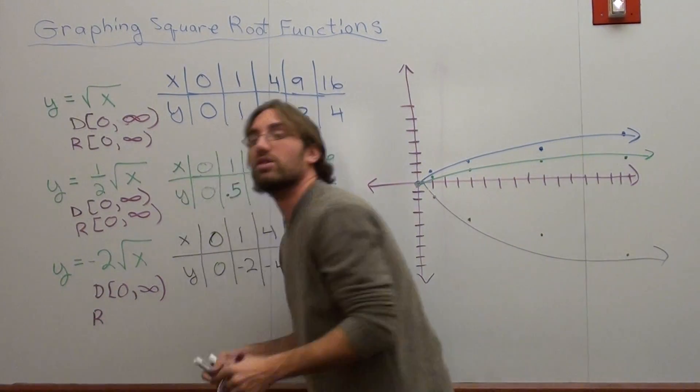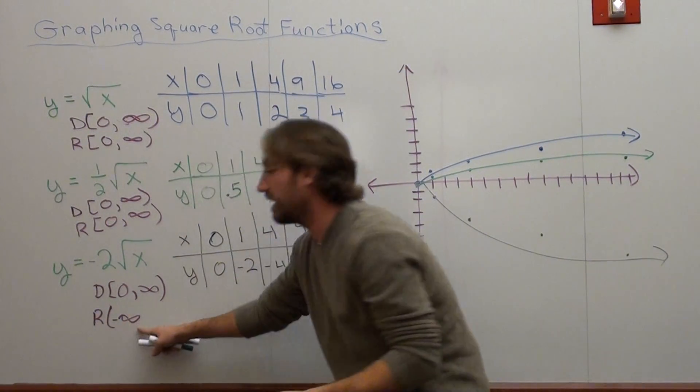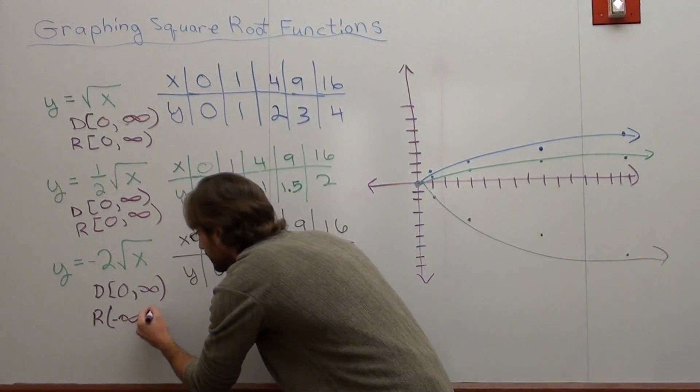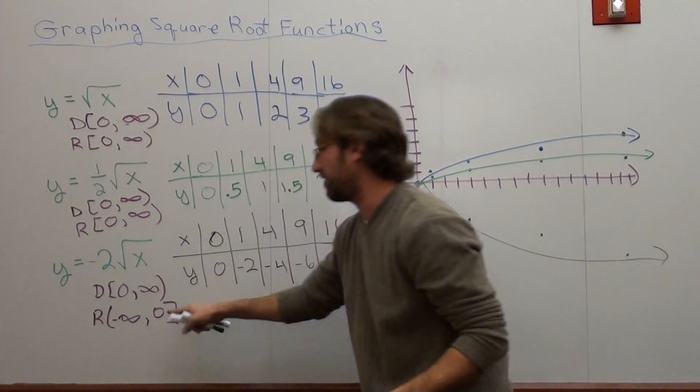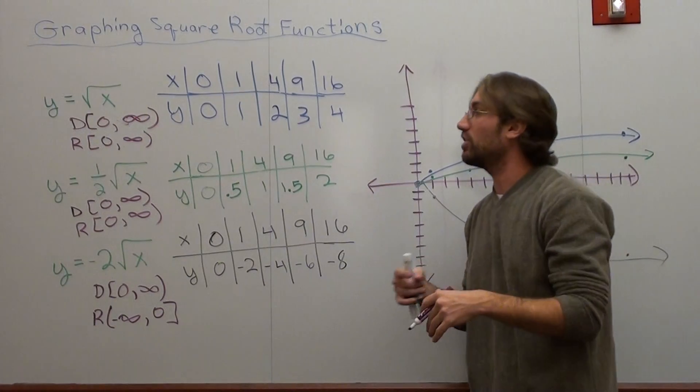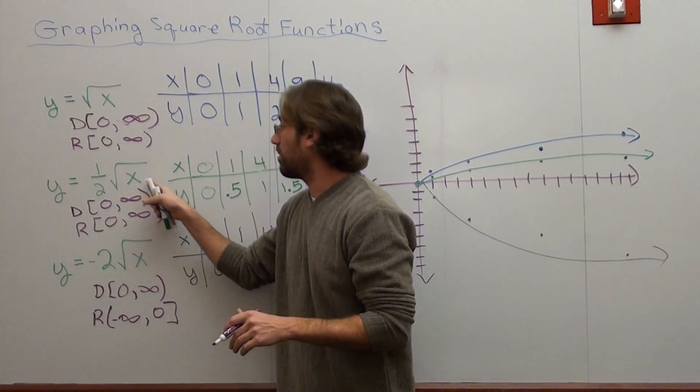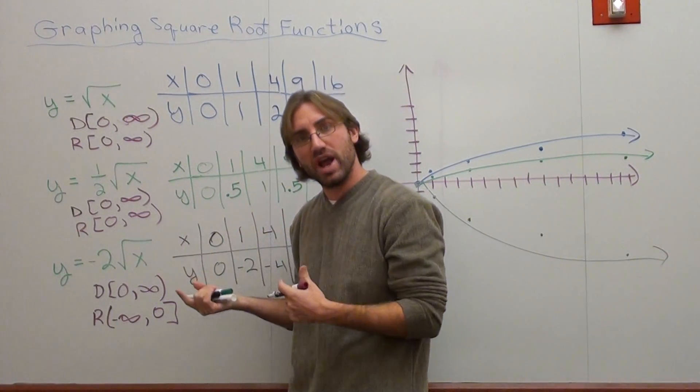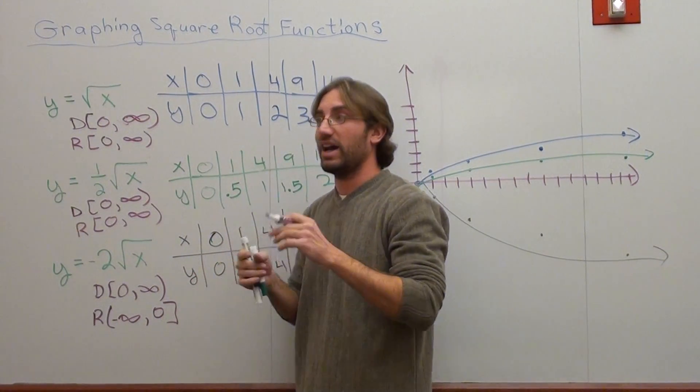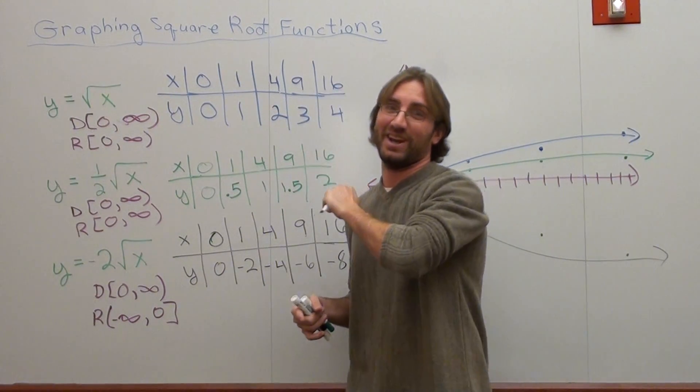That said, we're going to continue, but instead of putting a number in front of the x, we're going to put a number with the square root. We're going to add or subtract something with it, which affects the domain of the graph. But until then, have a good day for now. Goodbye.